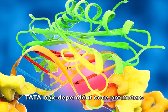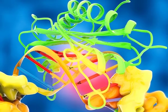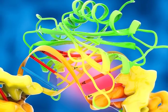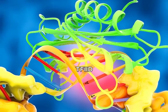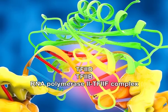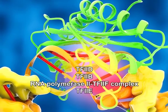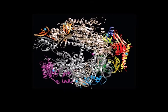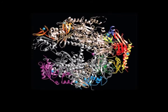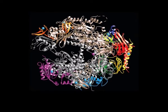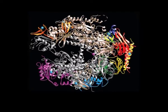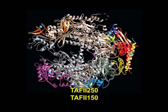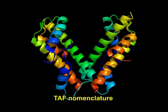It has been found that with TATA box-dependent core promoters, the general factors can assemble into a transcription pre-initiation complex called PIC, in the subsequent order: TF2D, TF2B, RNA polymerase II/TF2F complex, TF2E, and then TF2H. There are several TBP (TATA-binding protein) containing complexes, and therefore the TAFs associated in RNA polymerase II transcription are labeled TAF2-250, TAF2-150, and so on. The TAF nomenclature has been reviewed recently.